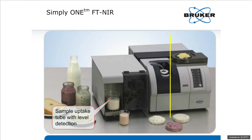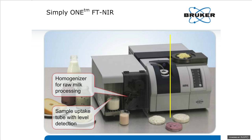Looking at the liquid sampling module, there's a sample uptake tube with level detection. The level detector switch serves two purposes: it keeps you from pumping air into the system if you run out of sample, and when the system does an automatic clean, it prevents the cleaning solution from back-flushing into the sample. The second part is the homogenizer, which is necessary for processing raw milk — a small valve that pumps the sample through at high pressure to chop up fat globules to make them smaller and give a more homogeneous presentation.